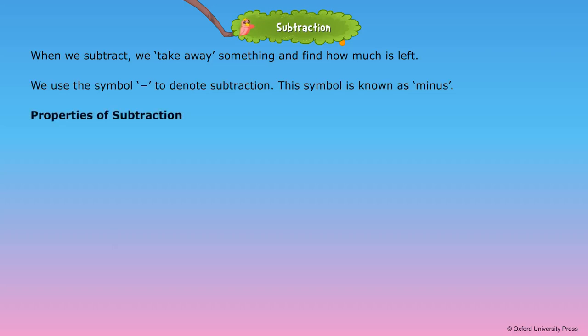Properties of subtraction. When any number is subtracted from itself, we get 0. Example: 5 minus 5 equals 0. When 0 is subtracted from any number,